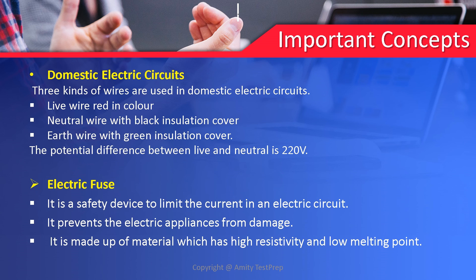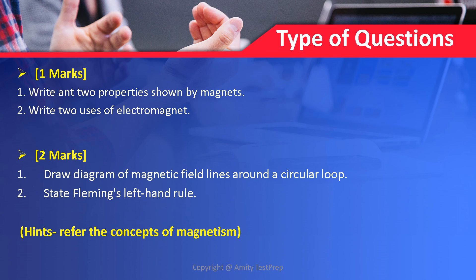These are some concepts and quick revision notes for the Magnetic Effect of Electric Current. Let us discuss the type of questions. One-mark questions can be MCQ, value-based, or one-liner. Two-marker and three-marker questions are also possible. There is no direct five-marker question; a five-marker is a clubbing of two or three concepts. Some examples: write any two properties shown by a magnet, or write two uses of an electromagnet. For two markers: draw the diagram of magnetic field lines around a circular loop, or state Fleming's left hand rule.